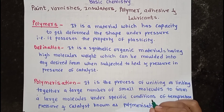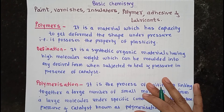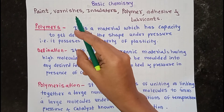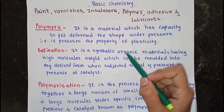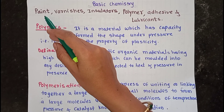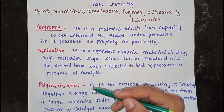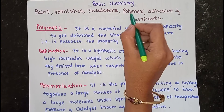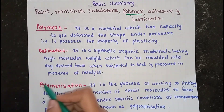Welcome back students to the basic chemistry course. In the previous session we discussed our third unit — paint, varnishes, insulators, polymers, adhesives and lubricants. In today's session we are going to discuss the next topic of this unit, which is polymers.